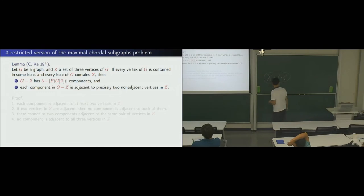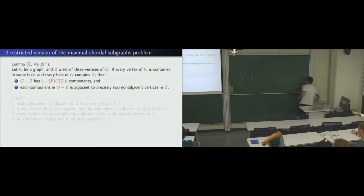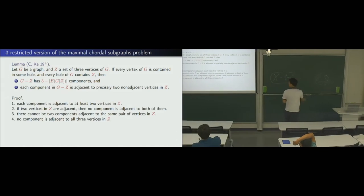So, it says that, if you have three vertices, like, so, everything else is basically just a component. That's the whole graph. That's it. So, the proof has four parts. The first one, we say, each component of G minus Z.